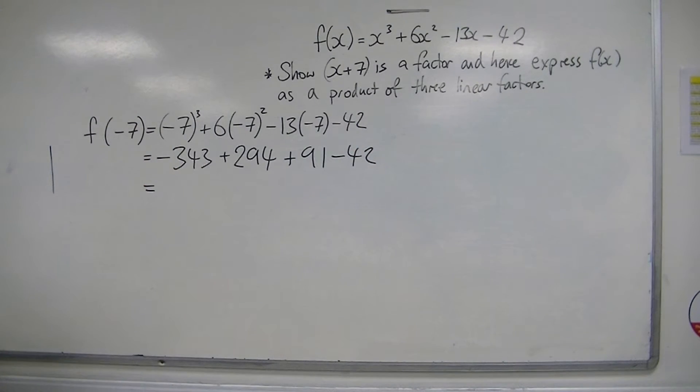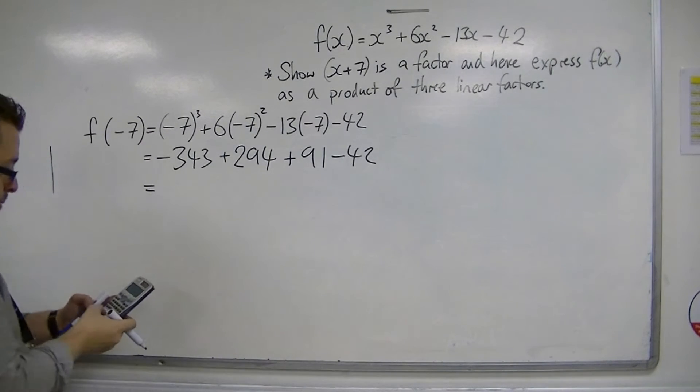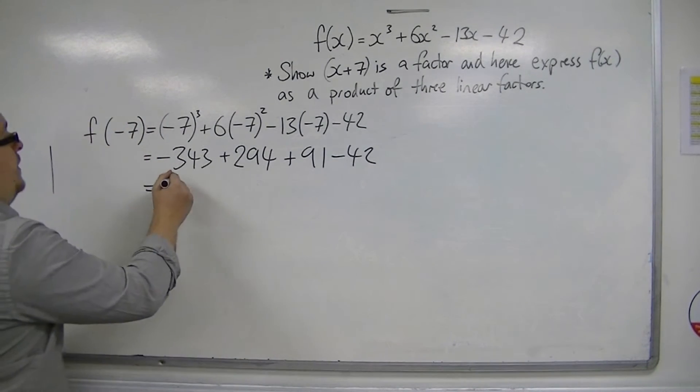So minus 343 plus 294, that gets you minus 49, plus 91 gets you 42, take away 42 will get you 0.